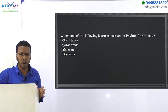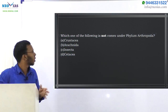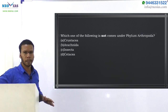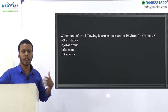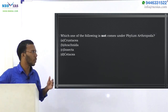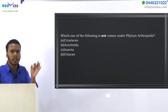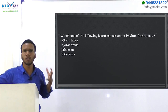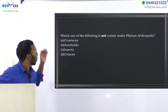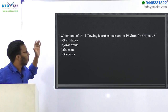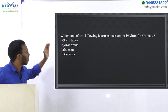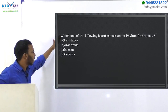This question is from the taxonomy of living world: which one of the following does not come under phylum Arthropoda? We know that Arthropoda is the largest phylum under the animal kingdom. Arthropoda means organisms having jointed bodies and jointed legs. The options given are Crustacea, Arachnidae, Insecta, and Cetacea.